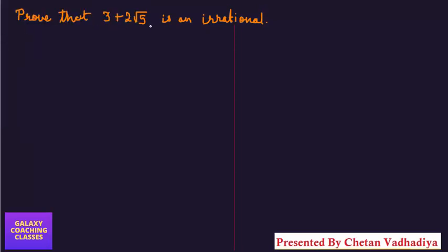So first of all you need to suppose this. Suppose 3 plus 2 root 5 is a rational number.